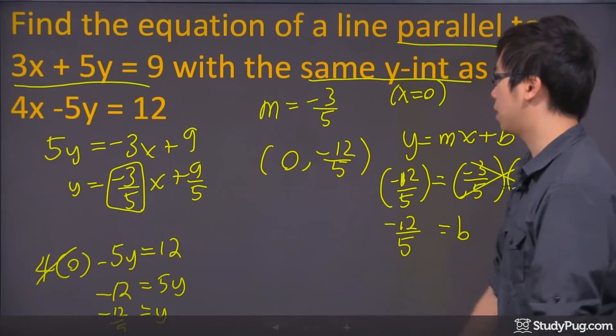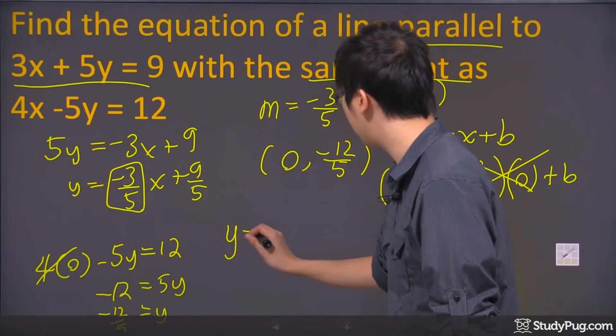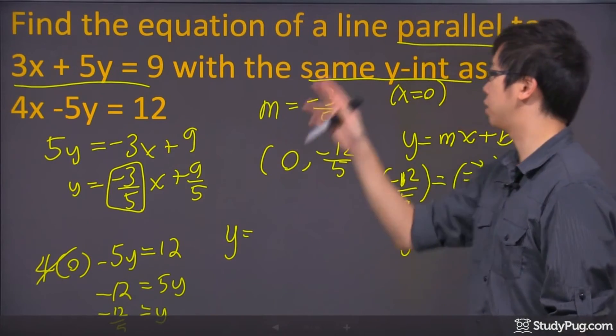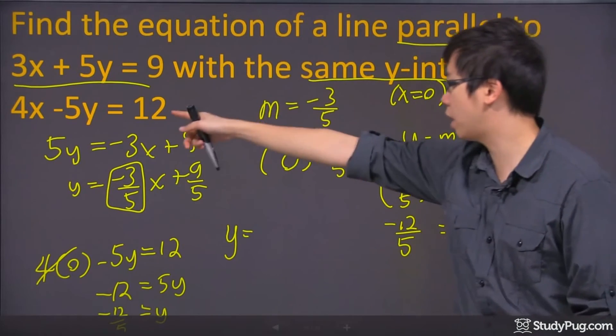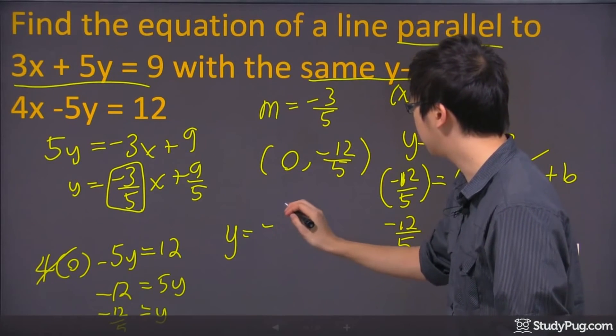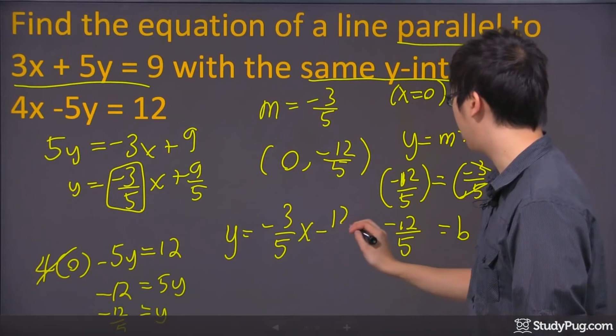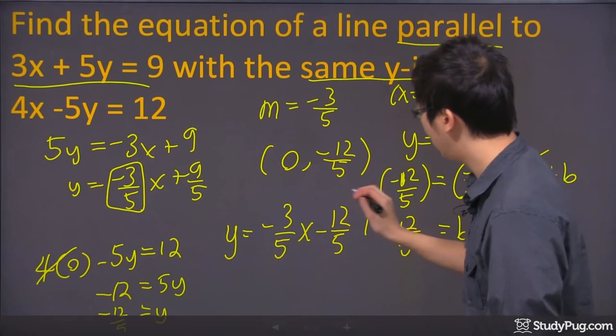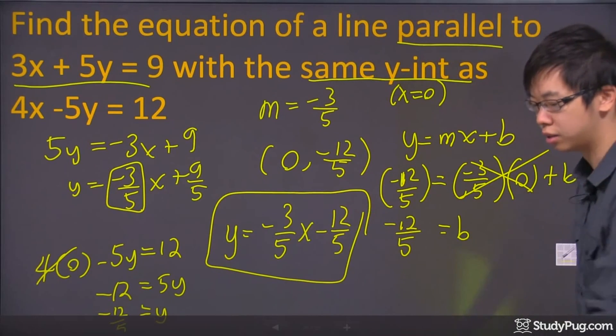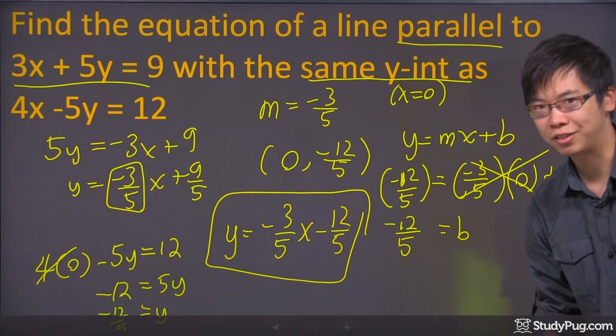Once you have everything, guess what? There's your equation right here. The new equation that has the same slope with this line and the same y-intercept with that line right there is negative 3 over 5x minus 12 over 5. And this is your final answer for this question. Thanks for watching.